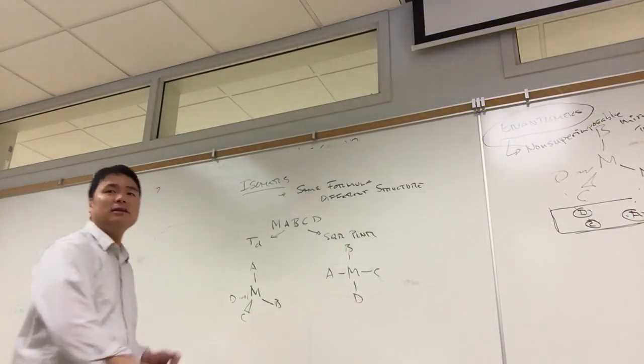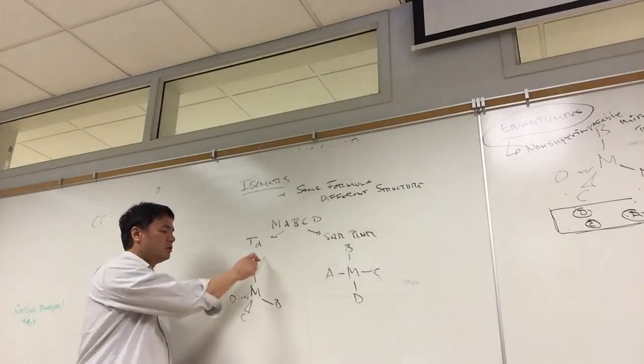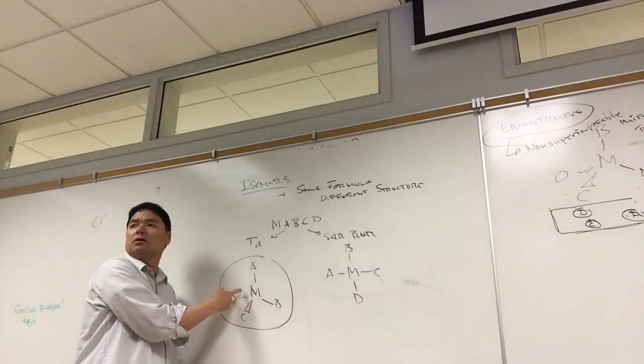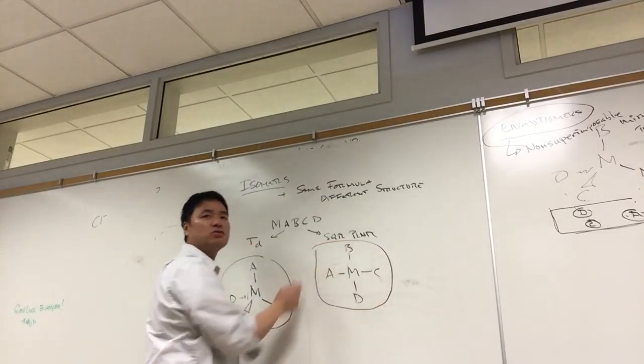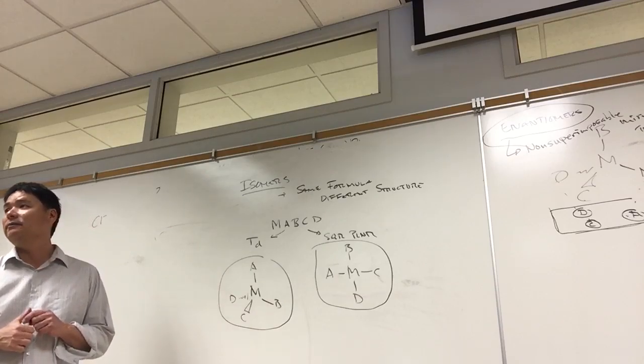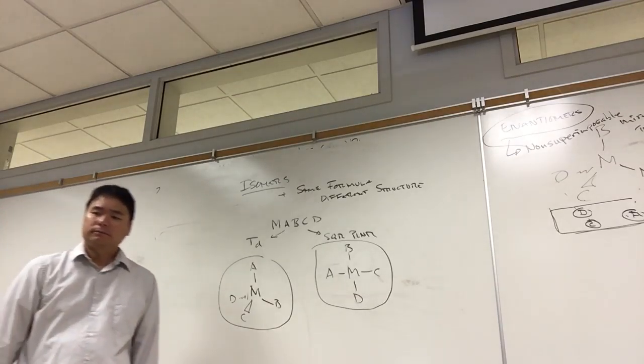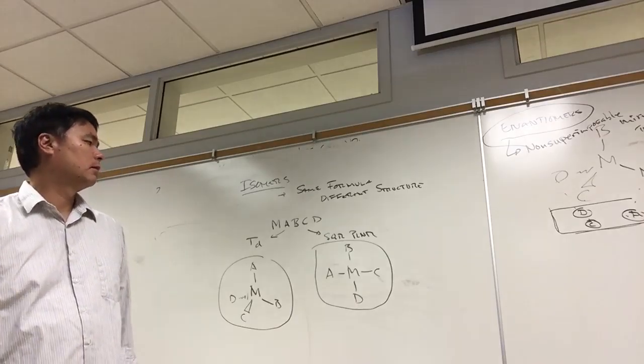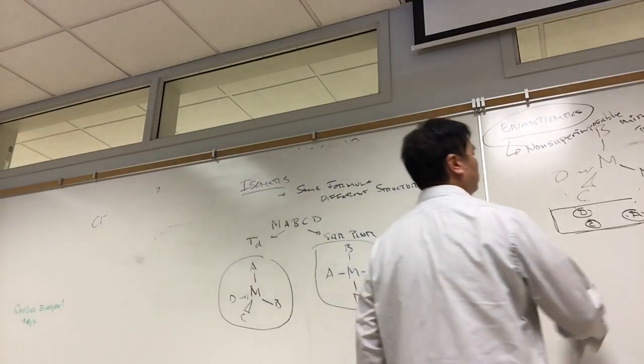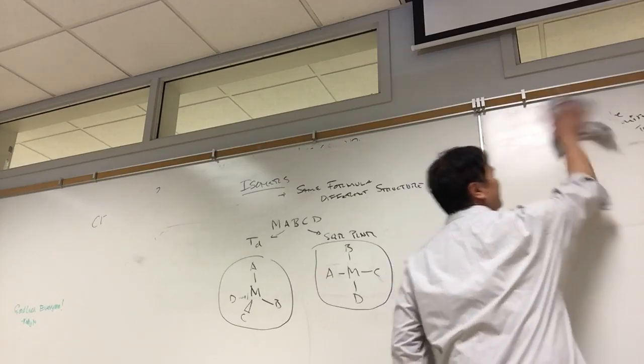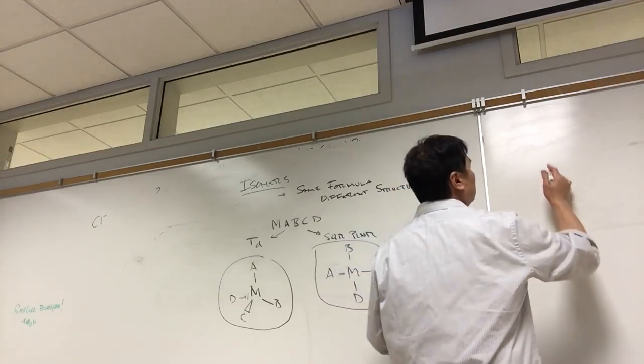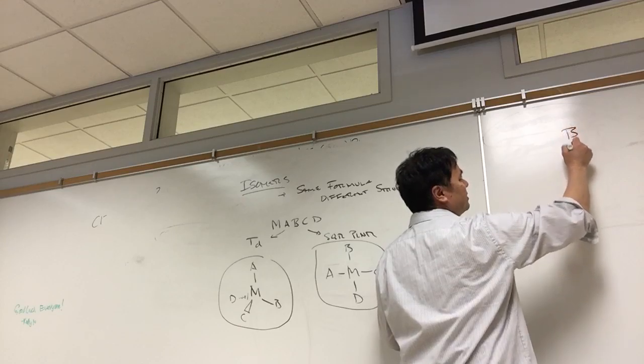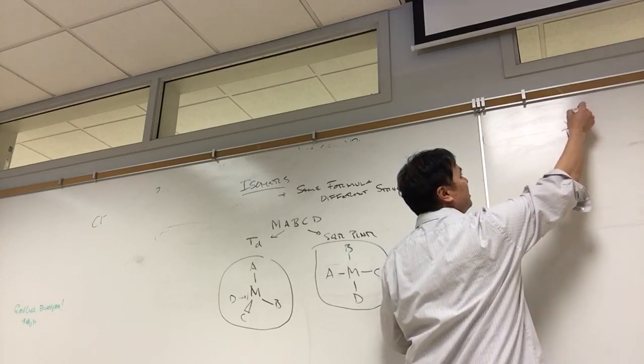All right, did everybody see that, the two structures, two isomers that you can write for this one? How many isomers can you generate for square planar? Three. Square planar is a bit different because we leave something fixed. It is three.